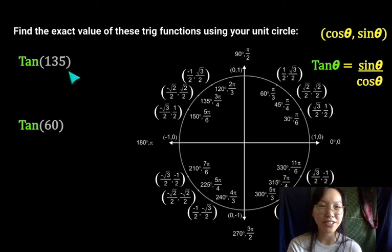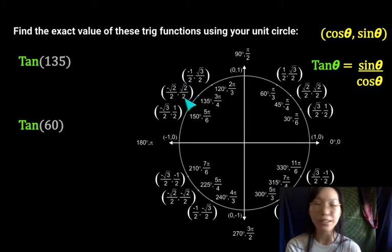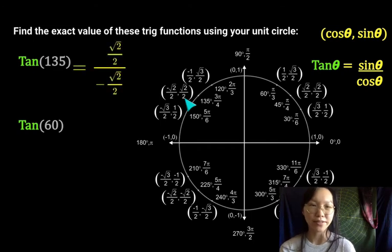So let's try tangent of 135. I'll go ahead and show it to you. Tangent of 135 is right here and the sine value is square root of 2 over 2 and the cosine value is negative square root of 2 over 2.